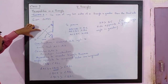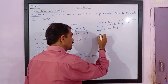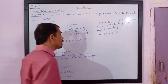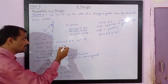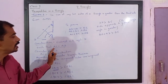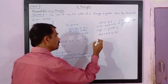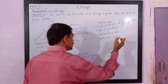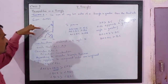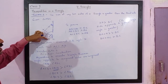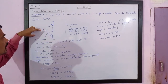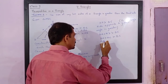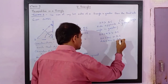Now, BD is nothing but BA plus AD. So BA plus AD is greater than BC. But our construction was AD equals AC, so I can substitute: BA plus AC is greater than BC. Therefore, AB plus AC is greater than BC. That is the first inequality proved.